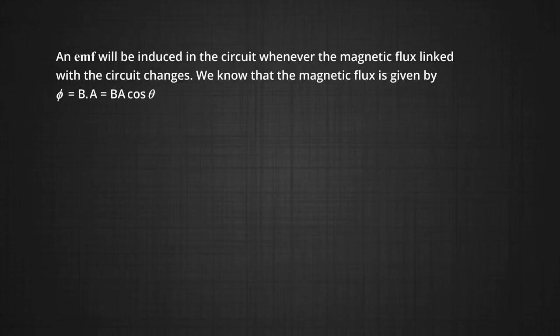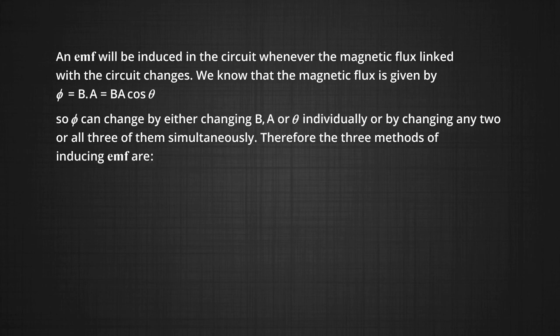We talked about the direction of induced current. Now we will talk about how EMF can be induced. An EMF will be induced in a circuit whenever the magnetic flux linked with the circuit changes. The magnetic flux is given by φ = B·A, which equals B·A·cos θ. So φ can change by either changing B, A, or θ individually, or by changing any two or all three simultaneously.